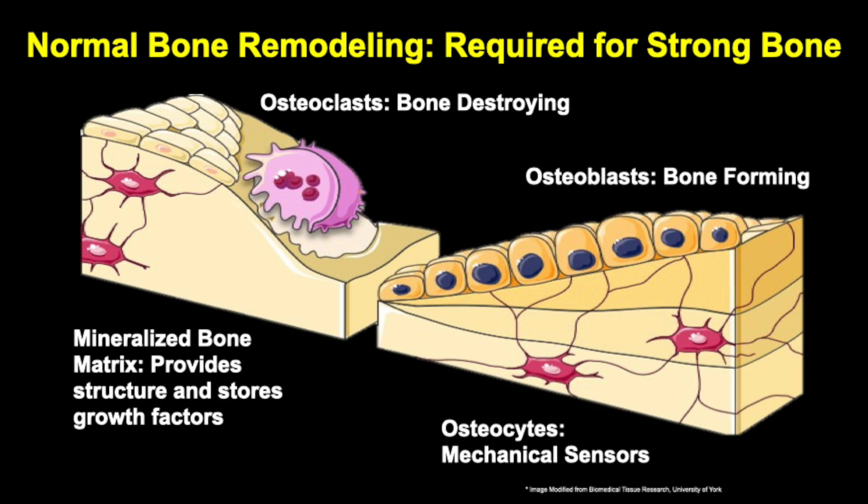And when they make bone, they bury themselves in that bone and become osteocytes. Osteocytes are the mechanical sensors of the bone. They sense microfractures, they sense stress, and they send signals to the osteoclasts and the osteoblasts.